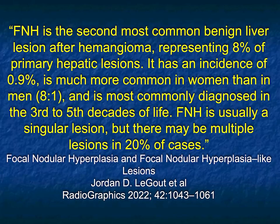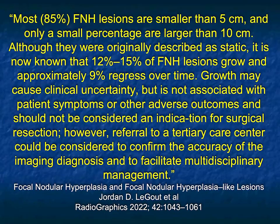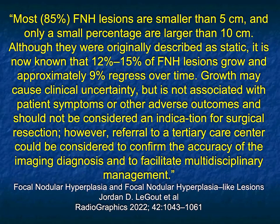FNH is an incidental finding with no malignant potential, but it can grow over time. It's the second most common benign liver lesion after hemangioma, more common in women, and can be multiple in up to 20% of cases. Most lesions are under 5 cm but some can be larger. They can hang off the liver, so they can be tricky. Confusion with hepatic adenoma, atypical hemangioma, or hepatoma is possible, but usually we have no problem making the right diagnosis. If uncertain, MR can be helpful.